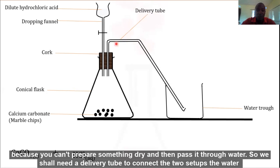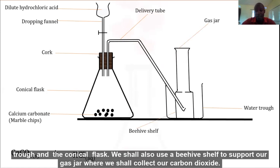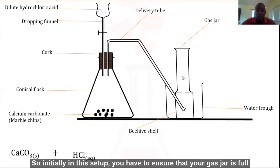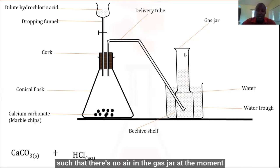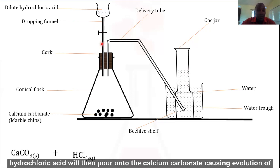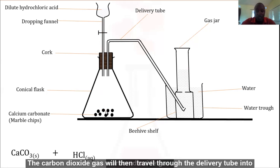We shall need a delivery tube to connect the two setups, the water trough and the conical flask. We shall also use a beehive shelf to support our gas jar where we shall collect our carbon dioxide. Initially in this setup you have to ensure that your gas jar is full of water to the brim such that there's no air in the gas jar at the moment. Not until you open this tap for the dropping funnel, the dilute hydrochloric acid will then pour onto the calcium carbonate causing evolution of carbon dioxide gas.